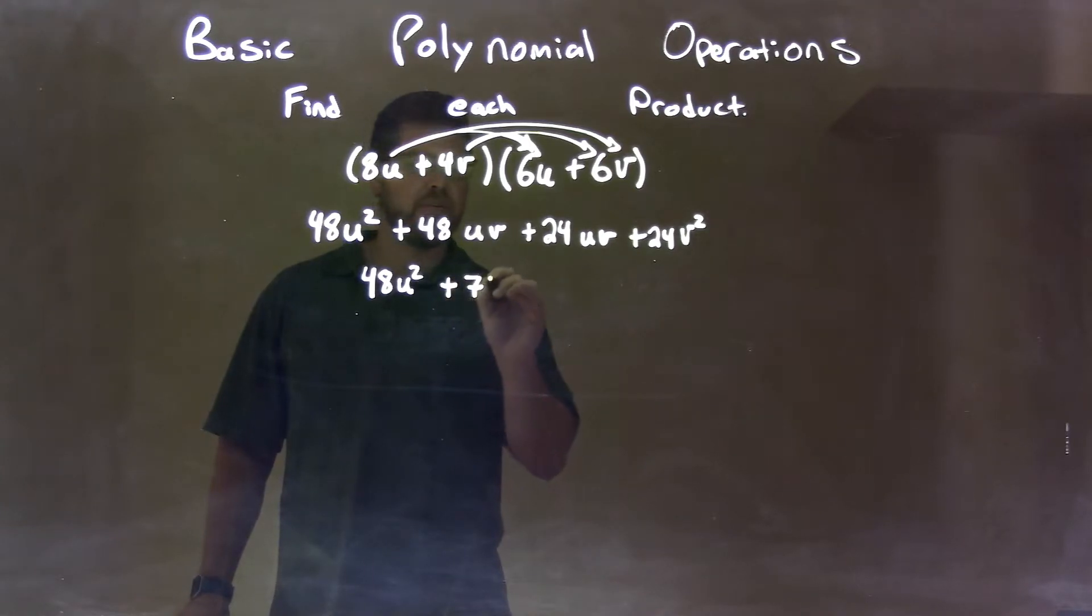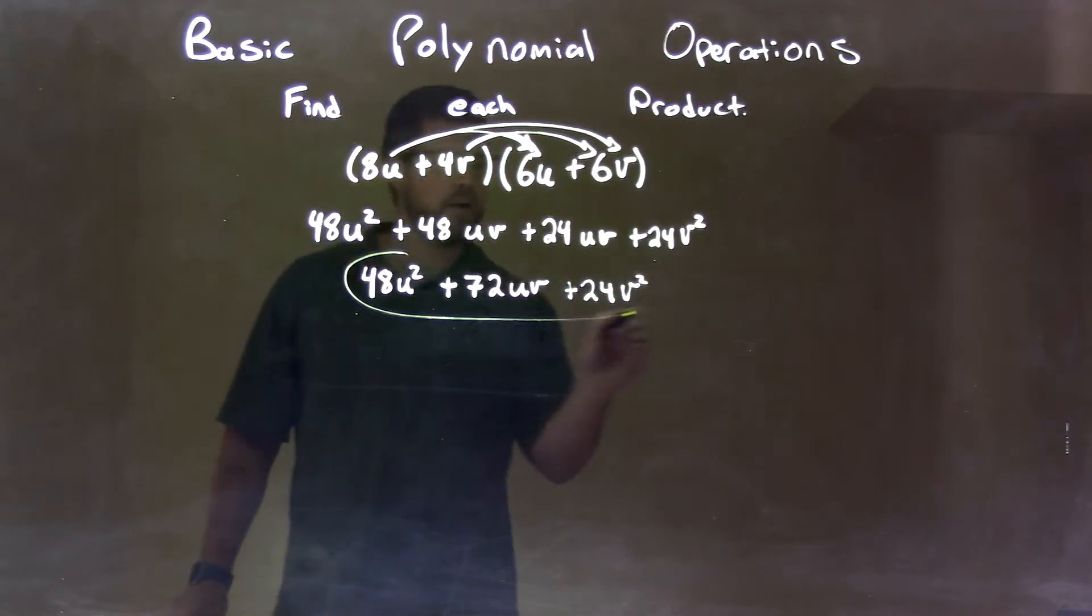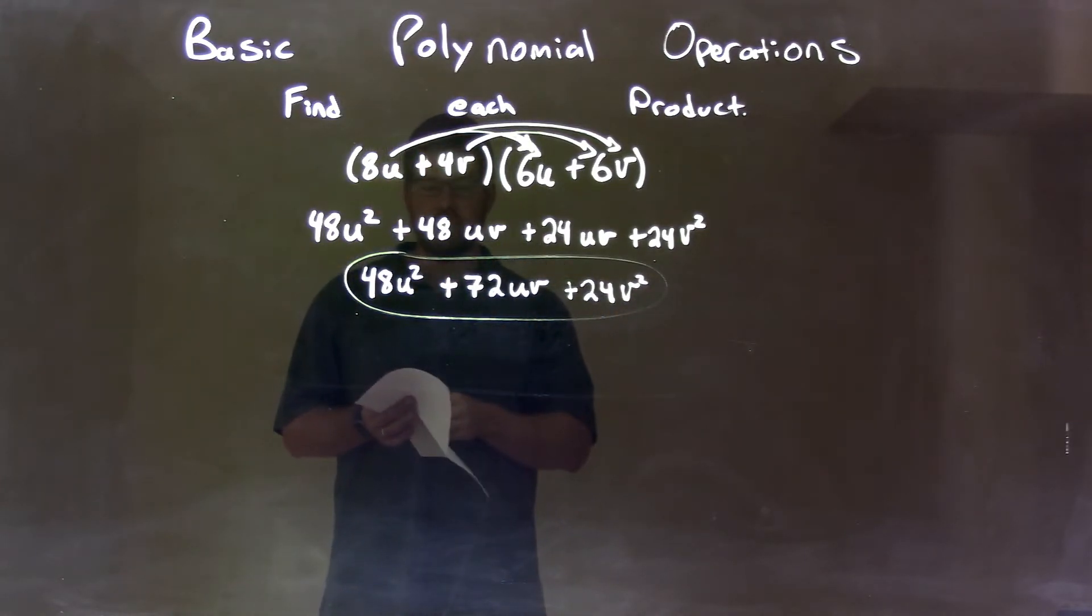We have plus 72uv and we bring down this last 24v squared, and there we have our final answer of 48u squared plus 72uv plus 24v squared.